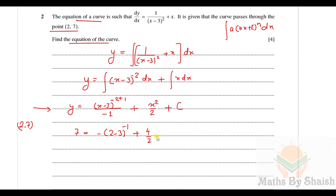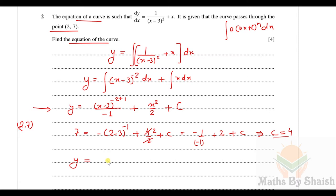Since the curve passes through (2, 7), substituting x = 2 and y = 7: 7 = −1/(2−3) + (2²/2) + C = 1 + 2 + C, giving C = 4. Hence the equation of the curve is y = −1/(x−3) + x²/2 + 4.